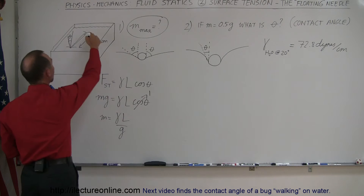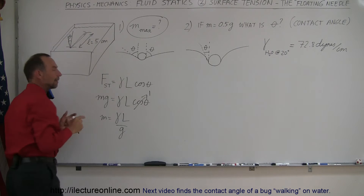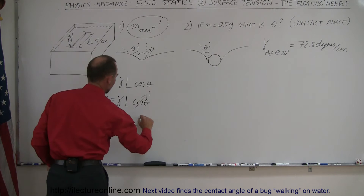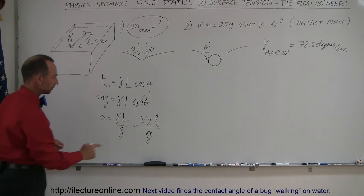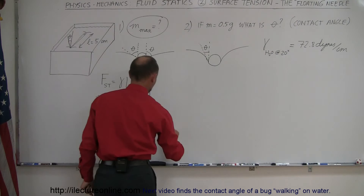Remember, L is going to be the total length of the surface that the liquid touches the metal of the needle — that's going to be twice the length of the needle, since the water contacts both sides. So the total contact length L is twice the length of the needle, divided by g. Let's plug in the numbers.